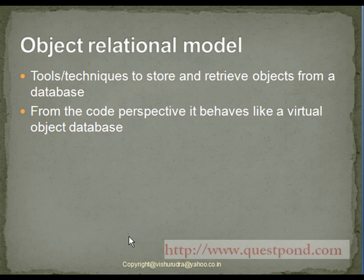The object-relational mapping model extends the features of both OODB and ORDB. An object-relational mapping is a tool or technique to store and retrieve objects from a database. From a coding perspective, it behaves like a virtual object database and not a relational database — that is, a relational database which stores data in rows and columns. Thus, in the case of ORM, whenever a query is executed, the result will be in the form of an object, enabling object-oriented programming language programmers to perform better.